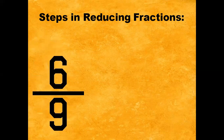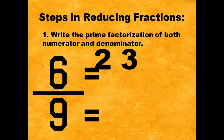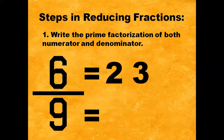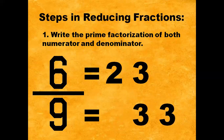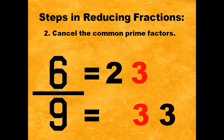Example number 2. We have 6/9. Step number 1: Write the prime factorization of both numerator and denominator. What are the prime factors of 6? We have 2 times 3. And for 9, we have 3 times 3. Step number 2: Cancel the common prime factors. In this case, the common prime factor of 6/9 is 3. In short, the GCF or greatest common factor is 3.